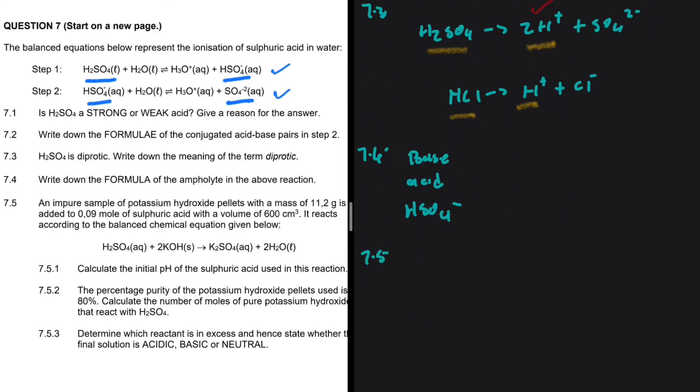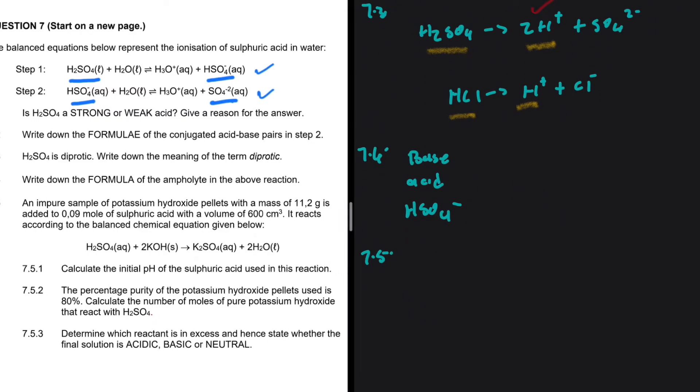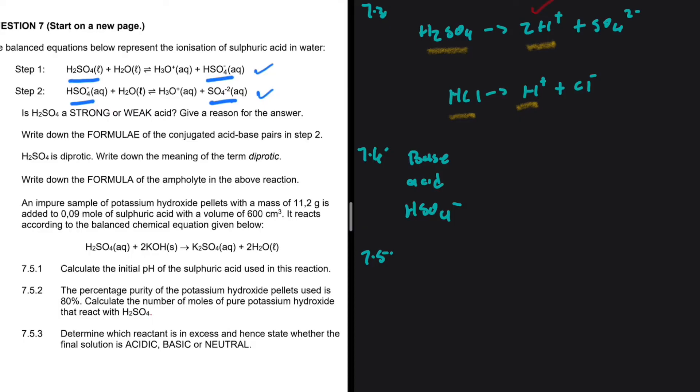Let's take a look at 7.5. An impure sample of potassium hydroxide pellets with a mass of 11.2 grams is added to 0.09 mole of sulfuric acid with a volume of 600 centimeter cubed. It reacts according to the balanced equation given below.